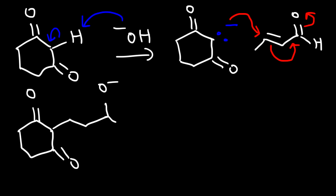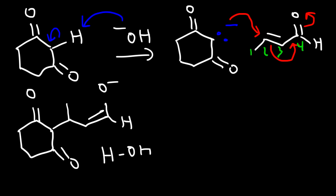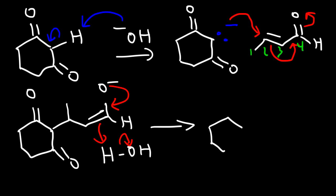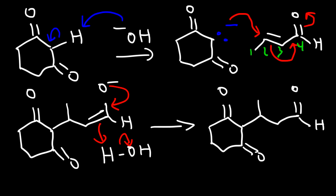The intermediate has an oxygen with a negative charge, a double bond, and a methyl group on that carbon. We have four carbons being added; the enolate attacked carbon 2 of the acceptor. In the last step, a hydrogen is added, giving the Michael reaction product. Once again, the product is a 1,5-dicarbonyl compound.